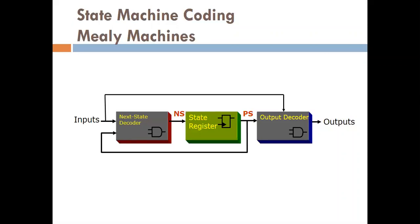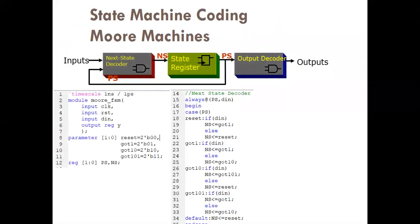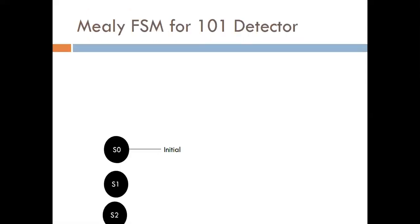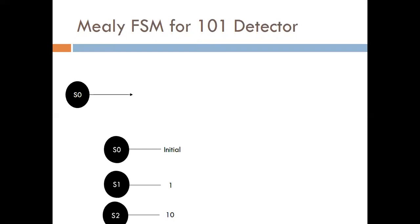In the Mealy machine, we are learning about the 101 sequence detector. The states are: S0 is the initial state, S1 represents having received a '1', and S2 represents having received '10'. We are not writing an S3 state because in the Mealy machine, we stop at S2. In the Moore machine, you must write S3 to show the output there.